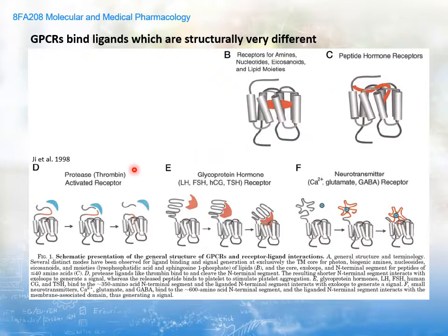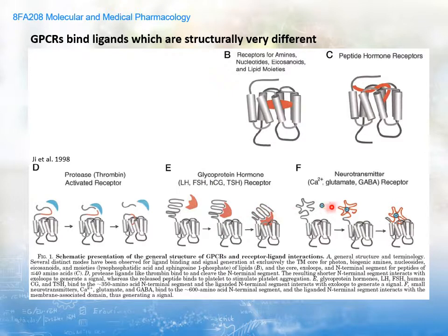There are other cases, much more exciting and exotic. You have the PAR receptors — the protease-activated receptors — in which the protease actually cleaves part of the receptor, as shown here. After cleavage, the extracellular portion of the receptor itself is what activates it — that is the receptor activation. You also have glycoprotein hormones that trigger conformational changes, as well as neurotransmitters such as calcium, glutamate, or GABA. All these structurally very different ligands actually interact with G protein coupled receptors.